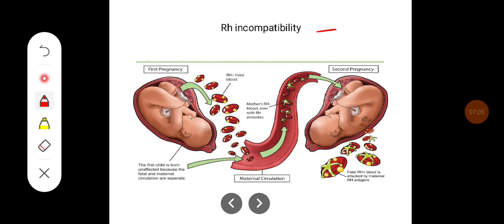Rh incompatibility can also occur during pregnancy if the mother is Rh negative and the baby is Rh positive. If the first-born baby is Rh positive, nothing will happen during that pregnancy because no antibodies have formed yet. However, during parturition some of the baby's blood mixes with the maternal blood, and antibodies against the Rh antigens develop in the maternal circulation. During a second pregnancy, if again the baby is Rh positive, there are chances these antibodies can affect the baby.